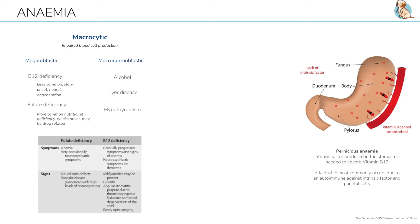On the other hand, folic acid deficiency is more common with faster onset. Folate deficiency in a pregnant woman can result in neural tube defects. Dietary deficiency may be seen in chronic alcoholics, poor diets, or the elderly. There are certain drugs, such as methotrexate, which is a folate antagonist.